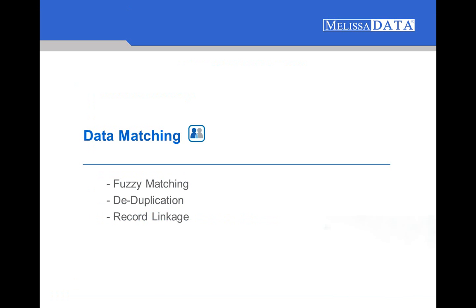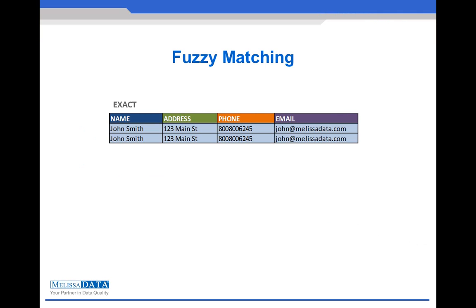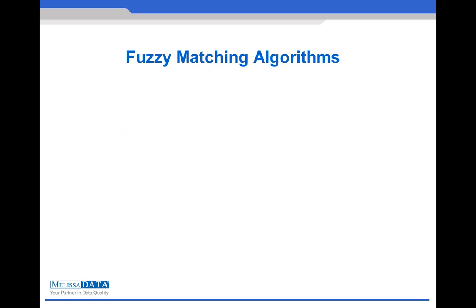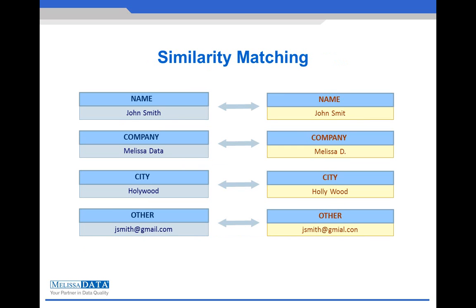The next part of the data quality spectrum covers matching, or record linkage. Matching is a crucial part of data quality, as it allows us to associate matching records with each other, enabling the removal of existing duplicate records in your database as well as blocking duplicates from newly incoming records. The data quality components give us the ability to not only match exact records but similar matching records as well, through built-in fuzzy matching algorithms such as Jaro-Winkler, Levenshtein, and others. Using string matching algorithms, it can accommodate any data type, including names, companies, or city names.